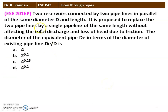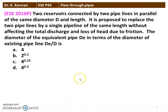The next question is from the 2016 question paper. Two reservoirs are connected by 2 pipelines in parallel of the same diameter D and length. It is proposed to replace the 2 pipelines by a single pipeline of the same length without affecting the total discharge and head loss due to friction. The diameter of the equivalent pipe DE in terms of the existing pipeline diameter — the correct answer is DE/D = 4 to the power 0.2.